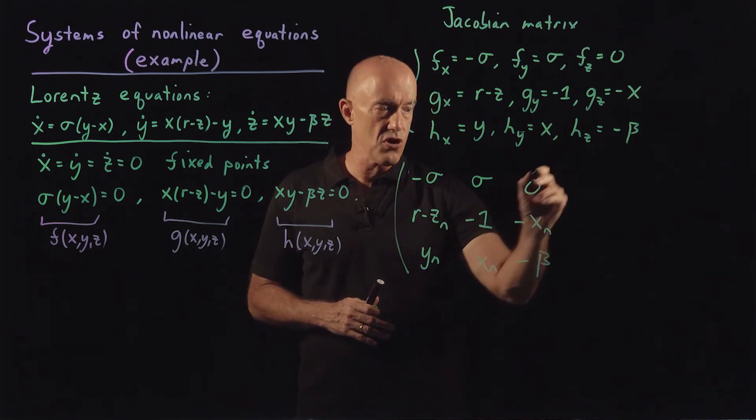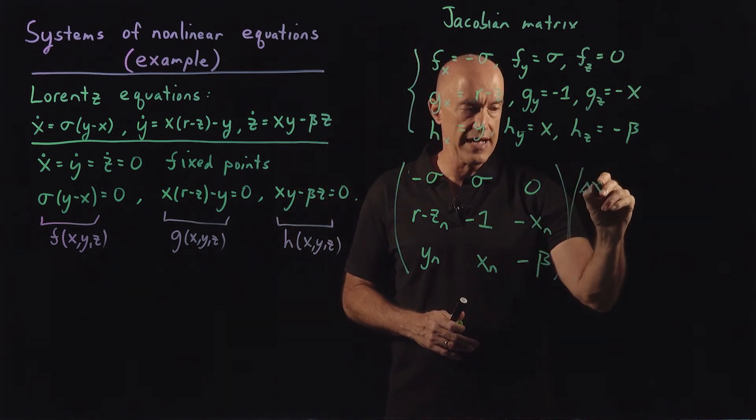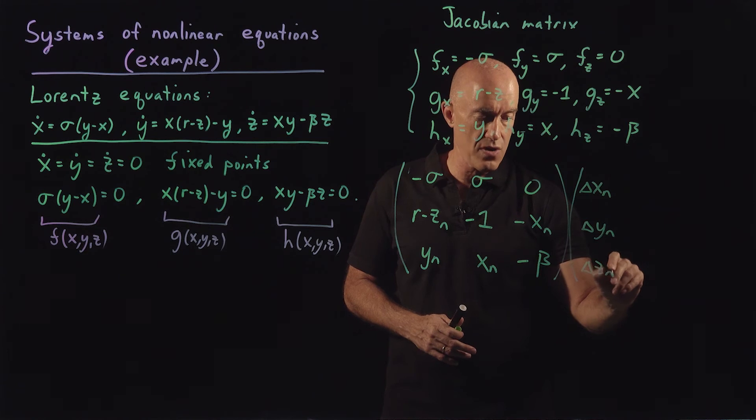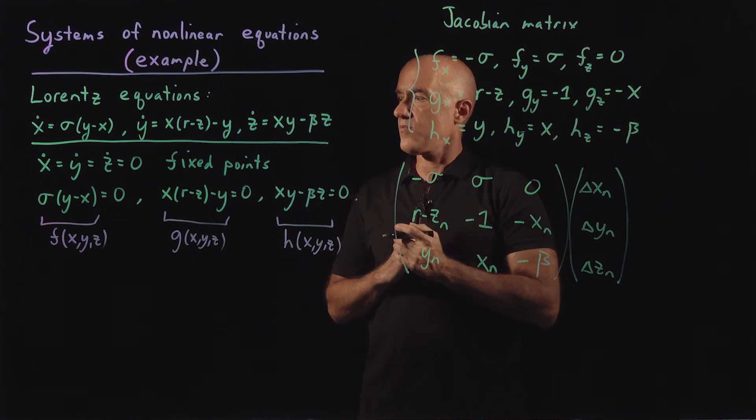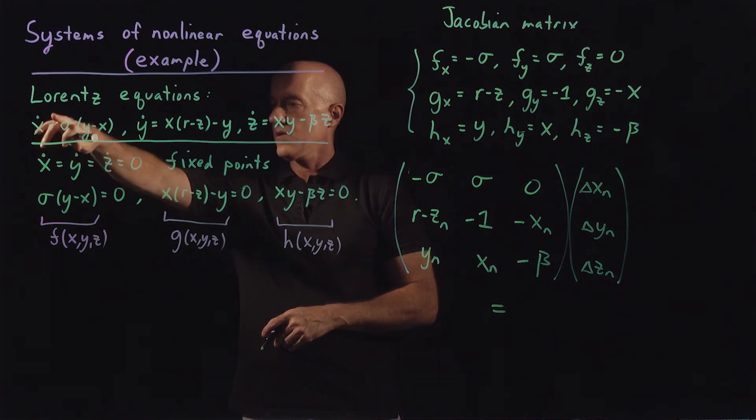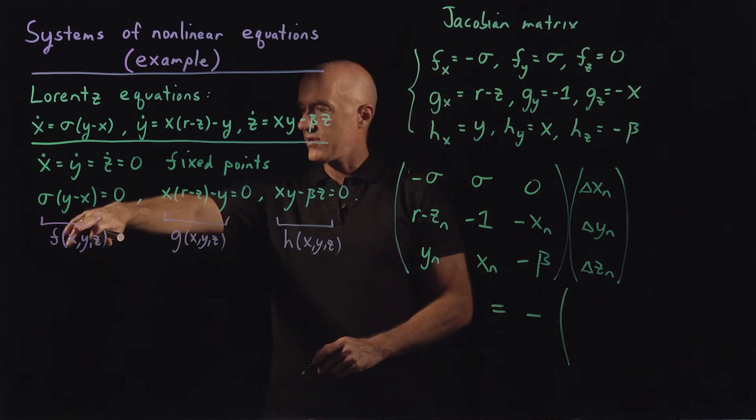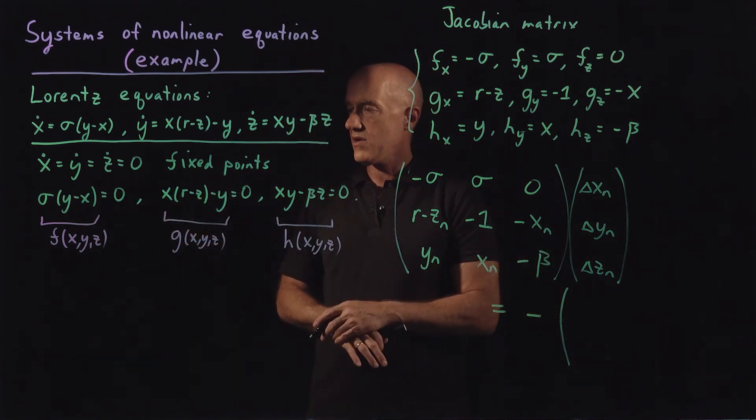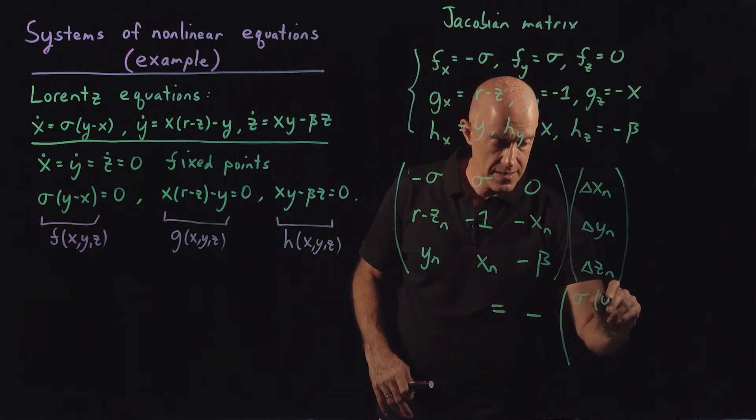So that's our Jacobian matrix. And that will multiply our delta x_n, delta y_n, and delta z_n, our correction. And that's supposed to be equal to our right hand side. So that's equal to the right hand side, which will be minus the column vector, which will be f evaluated at x_n, y_n. So the first column will be sigma(y_n minus x_n).